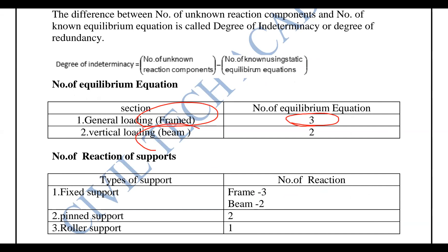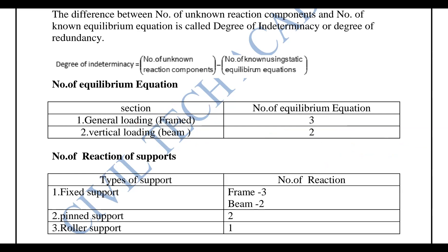For a beam, the equilibrium equations are 2: sum of vertical force equal to zero, and sum of moment equal to zero. The number of reactions: for a fixed support it is 3, for a framed structure it is 3, and for a beam it is 2. A pinned support has 2 reactions, and a roller support has 1 reaction.